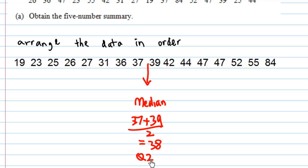Then I want to find Q1. We have 8 numbers before the median, so Q1 is in the middle of 26 and 27. Notice that there are 4 numbers before Q1 and 4 numbers after Q1. So Q1 is in the middle of 26 and 27, which gives us 26.5.